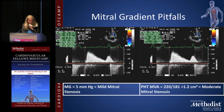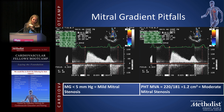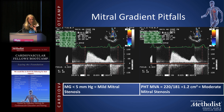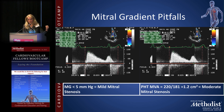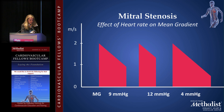Here's an example: we traced the stenotic CW jet across the mitral valve and got a mean gradient less than 5, consistent with mild mitral stenosis. Then using the pressure half-time formula to calculate valve area, we got 1.2 centimeters squared — consistent with moderate mitral stenosis. This discrepancy happens all the time. Looking back at the top left panel, the heart rate is 49, which prolongs the diastolic filling period, allowing the mean gradient to be very low. So this patient really does have moderate mitral stenosis.